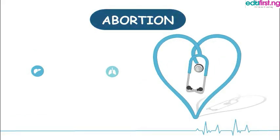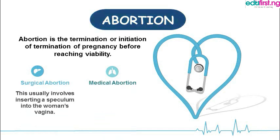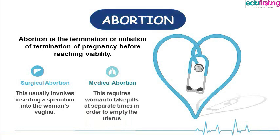We also look at abortion. Abortion is the termination or initiation of termination of pregnancy before reaching viability. In simple terms, abortion is the way in which the woman terminates pregnancy. There are several forms of abortion. The first one is surgical abortion, which involves inserting a speculum into the woman's vagina. Medical abortion requires a woman to take pills at separate times in order to empty the uterus. Several processes usually follow the taking of the pills, including dilation and flushing of the womb.